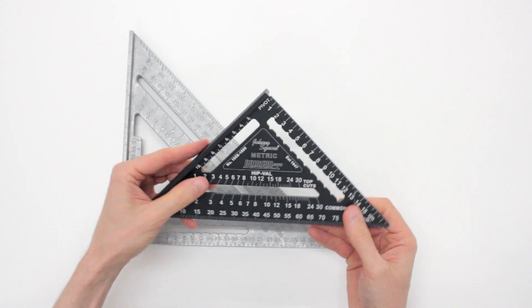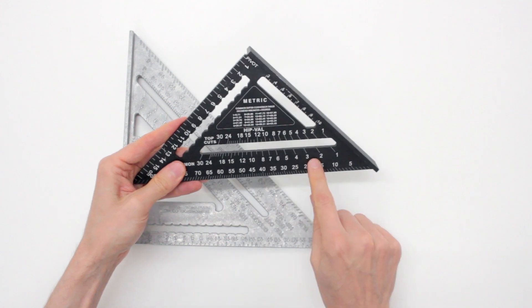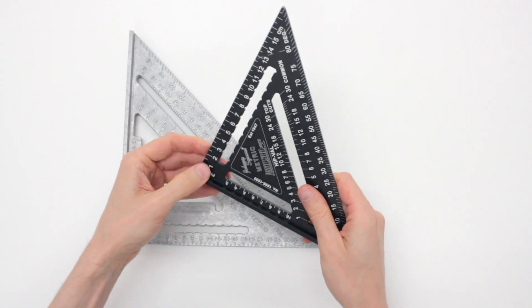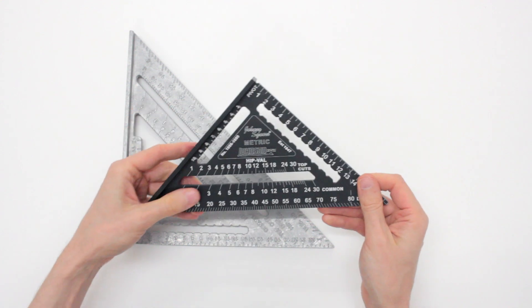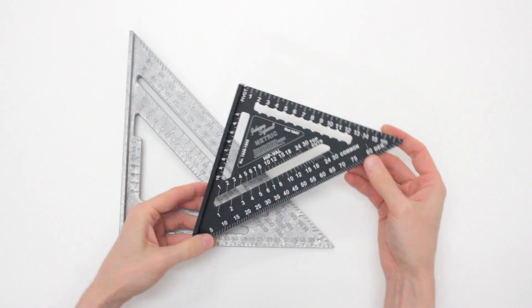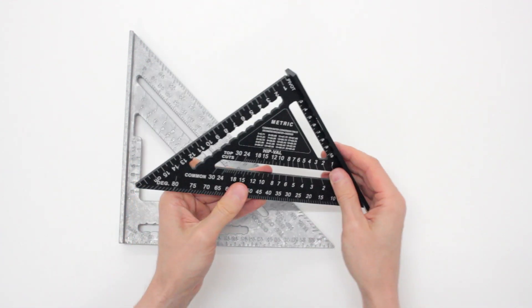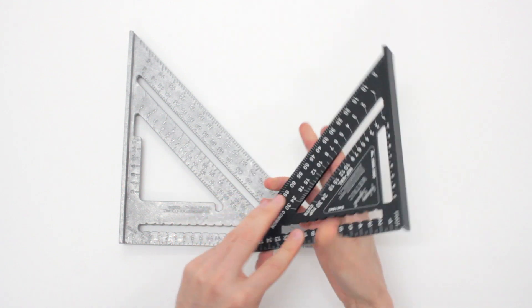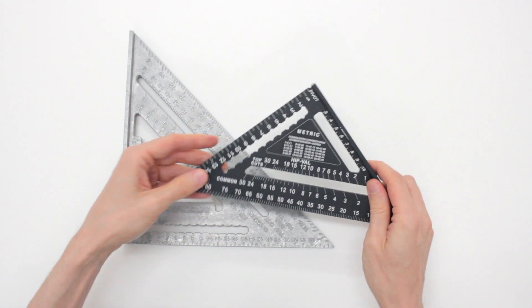The Johnson's metric speed square doesn't have recessed markings. It's very smooth and the numbers and markings are laser-etched, kind of paint, if you simplify. But it is much more precise and very, very easy to read. The Swanson is very rough and it looks like stamped or something. And maybe it will stand up to abuse better than the Johnson.